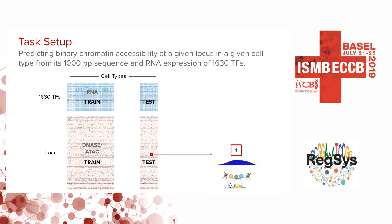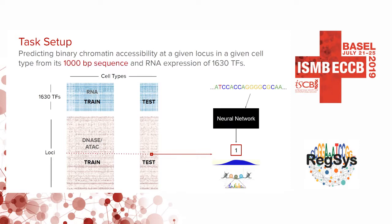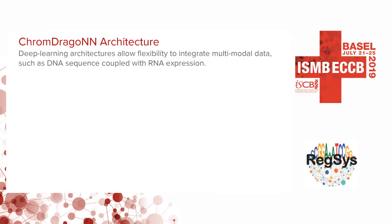The crux of our problem is to predict chromatin accessibility at a given locus in a given cellular context from a thousand base pair sequence of that locus and the expression of around 1,600 transcription factors in that cellular context. We use a deep learning-based method, since deep learning architectures allow the flexibility to integrate such multi-modal data — DNA sequence coupled with RNA expression.